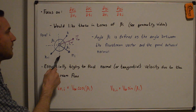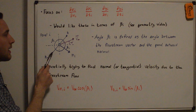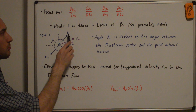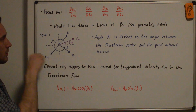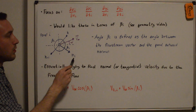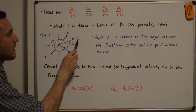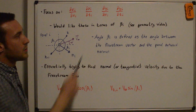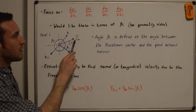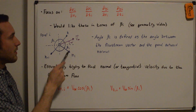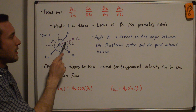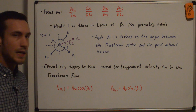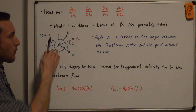To recap the geometry: here is a single panel i going from boundary point k to point k+1, so the outward normal points outward — that's n_i. The free stream velocity vector V_infinity makes an angle of attack alpha with the x-axis, and we can break it into components v_x and v_y. Delta_i is the angle between the positive x-axis and the panel normal. Beta_i is defined as the angle between the free stream velocity vector and the panel outward normal. So essentially we're finding the normal or tangential velocity due to the free stream for this particular panel.